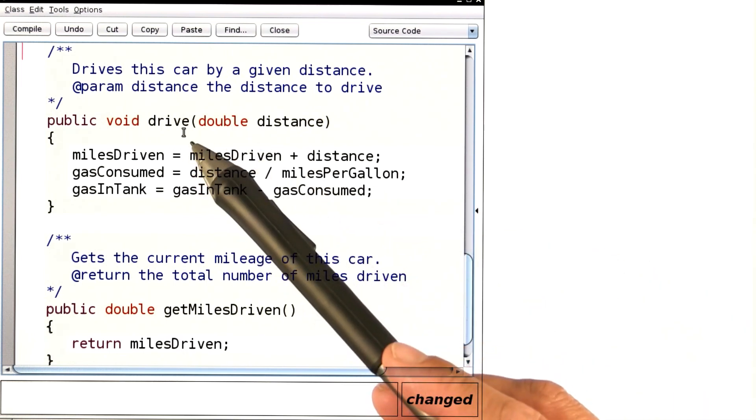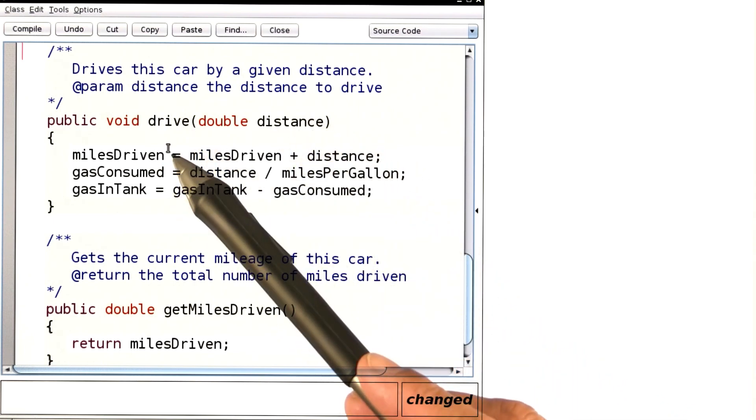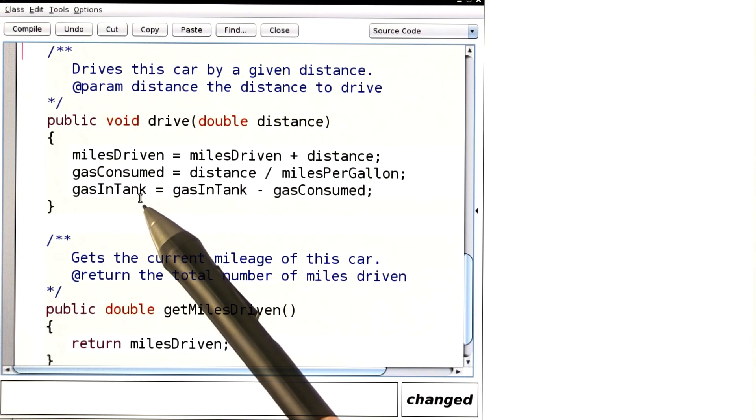So over here, I have my drive method. I drive a given distance. I update the miles driven. I compute the gas consumed. I update the gas in tank.